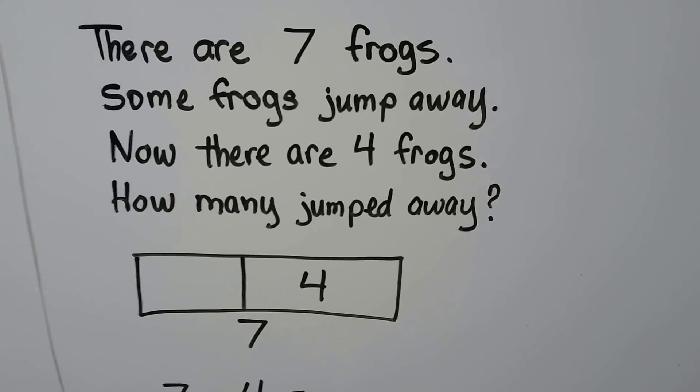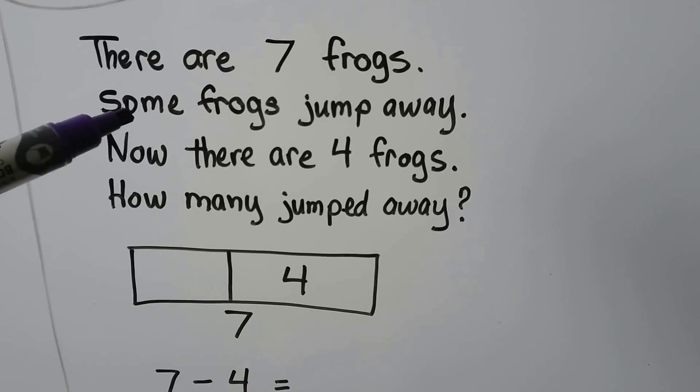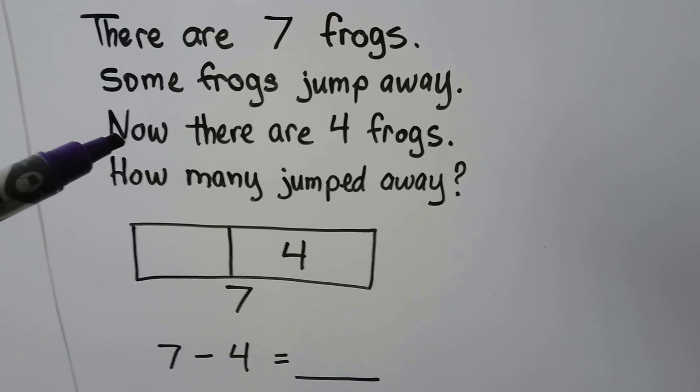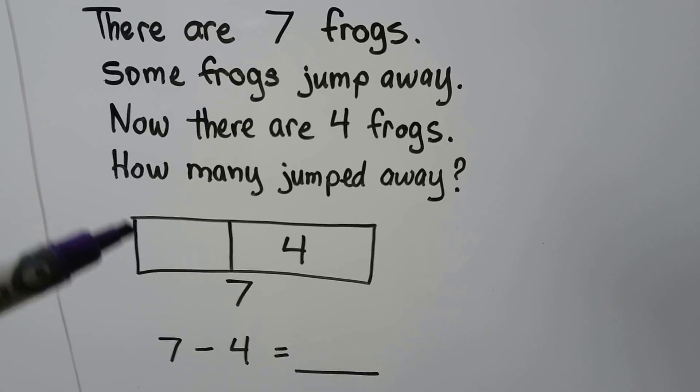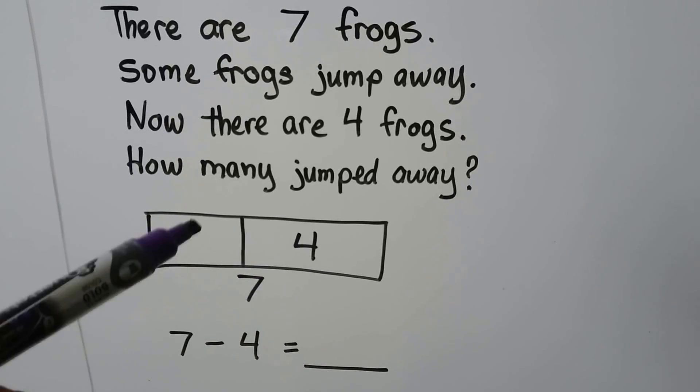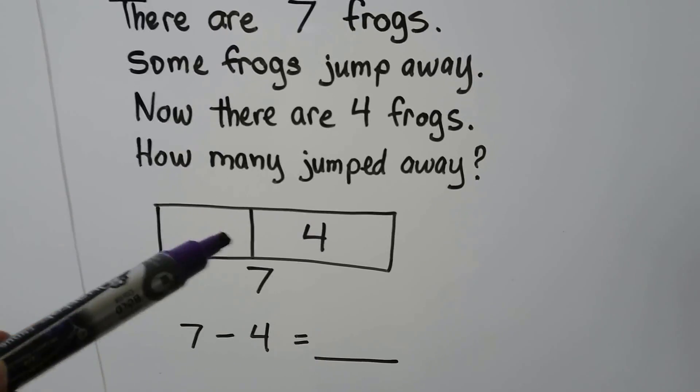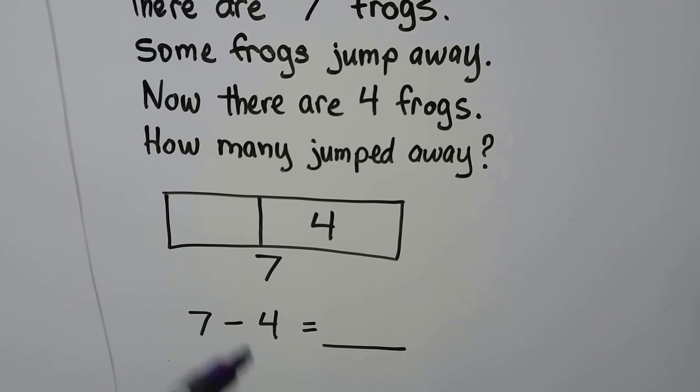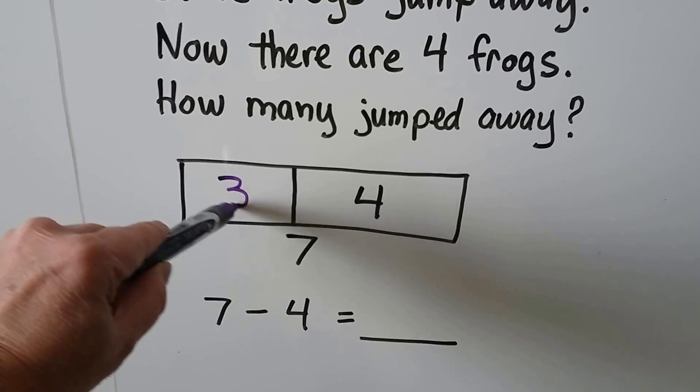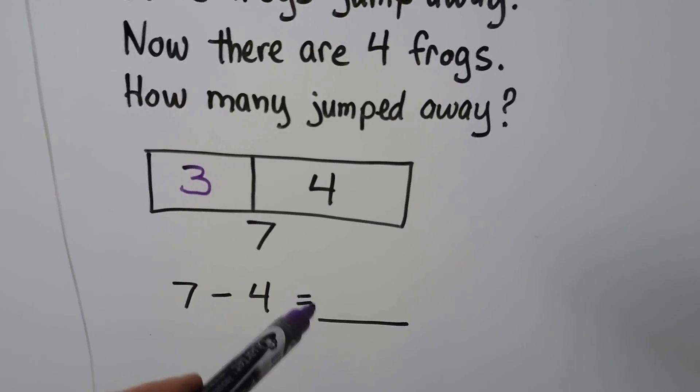There are seven frogs. Some frogs jump away. It doesn't tell us how many. It just says some. Now there are four frogs. How many jumped away? There's seven in all. Now there are four. How many jumped away? What number plus four is equal to seven? If you say three, you're right. Seven minus four is equal to three.